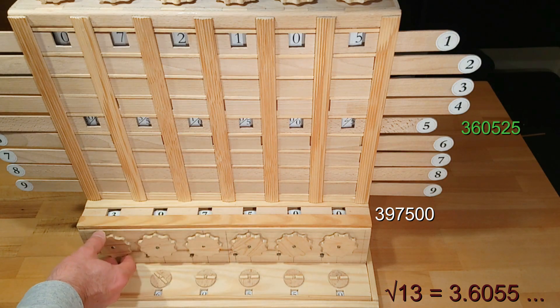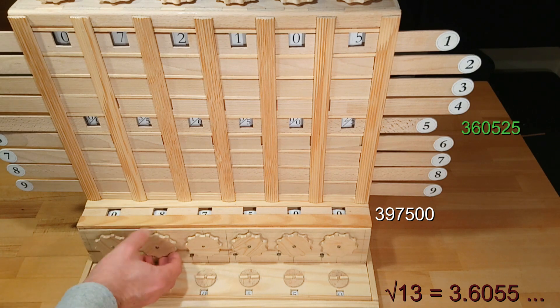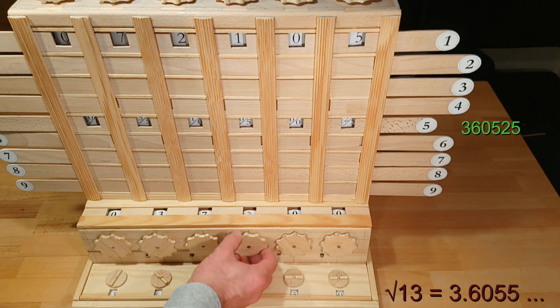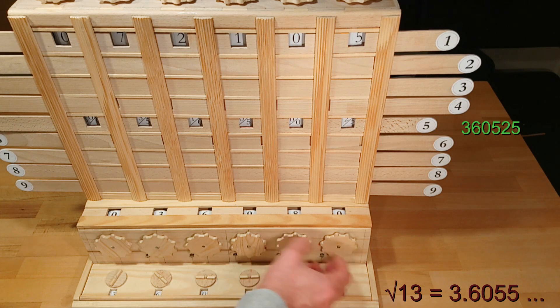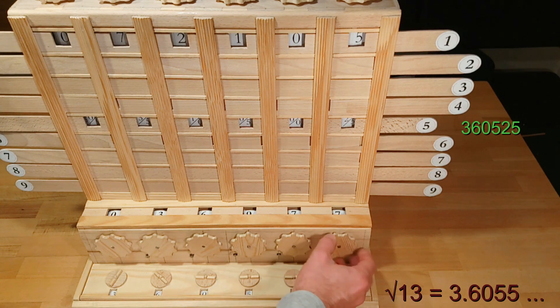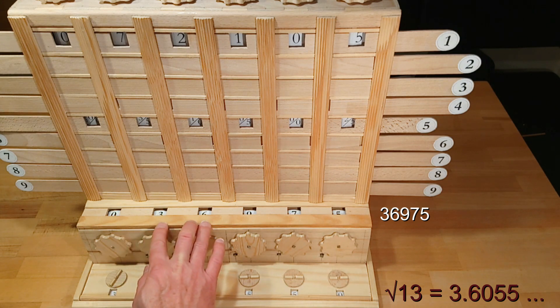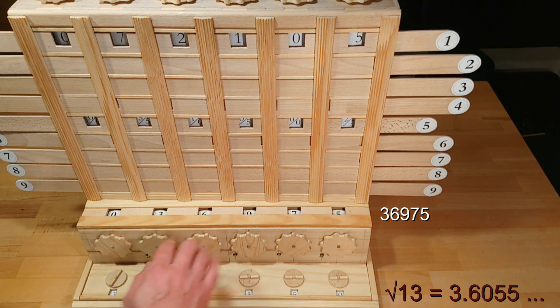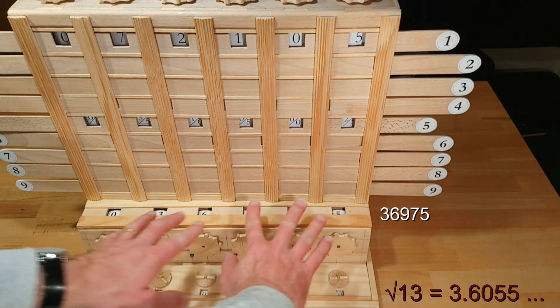We now have to subtract the 360,525 from the number in the adder. And the remainder is 36,975. That's a five digit number.